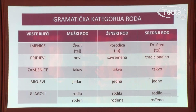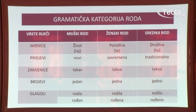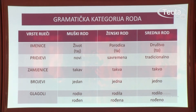U tabeli su prikazani primjeri uglavnom vezani za tekst koji smo radili na prethodnom času. Za imenice: život – imenica muškog roda, jednina; porodica – imenica ženskog roda; i društvo – imenica srednjeg roda. Za pridjeve: novi – muški rod, savremena – ženski rod, tradicionalno – srednji rod. Zamjenice: takav – muški rod, takva – ženski rod, takvo – srednji rod. Brojevi: jedan, jedana, jedno. Glagoli: rodio ili rođen – muški rod; rodila ili rođena – ženski rod; rodilo, odnosno rođeno – srednji rod.